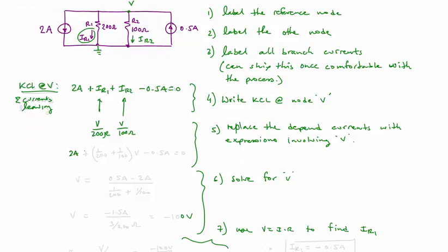We now rewrite our equation where we have 2 amps plus 1 over 200 plus 1 over 100 times V minus 0.5 amps. And here we have that single equation, single unknown. And we solve for V.